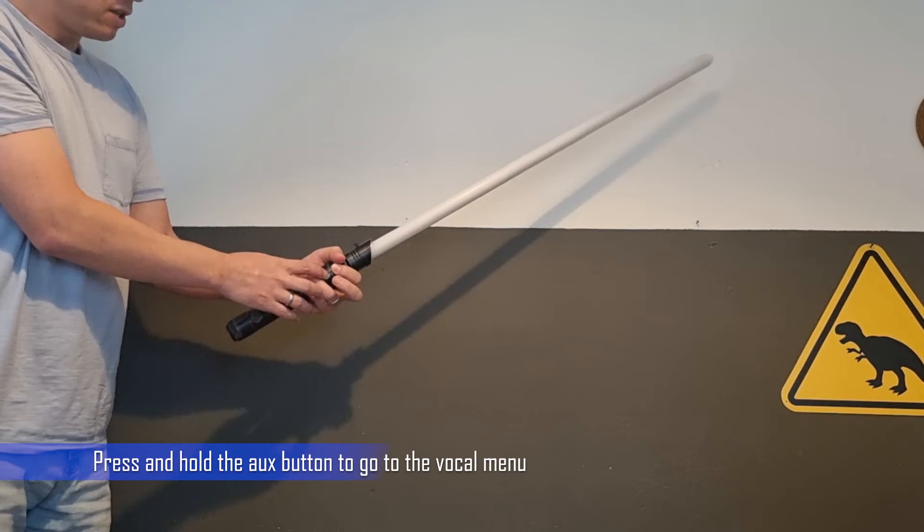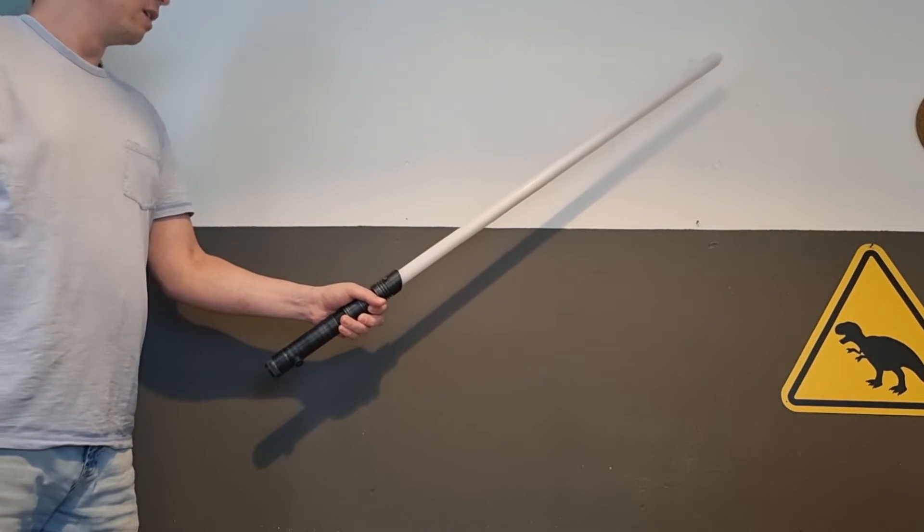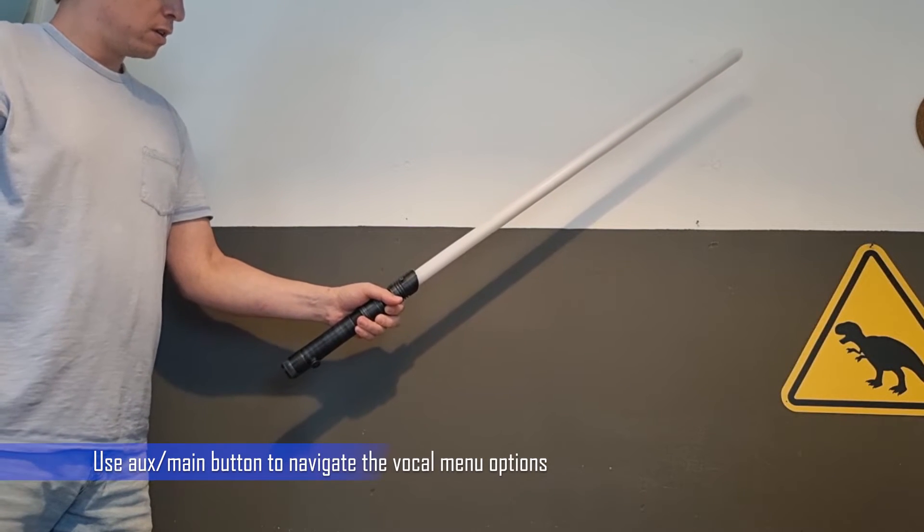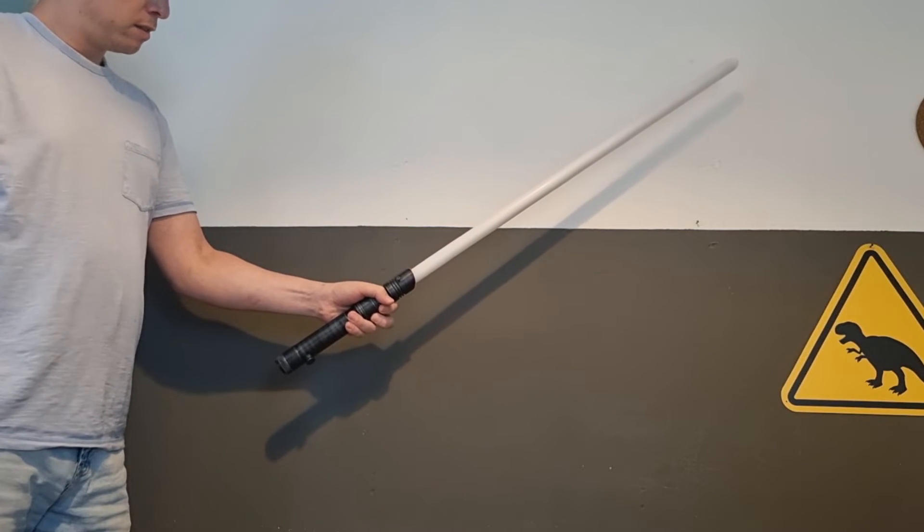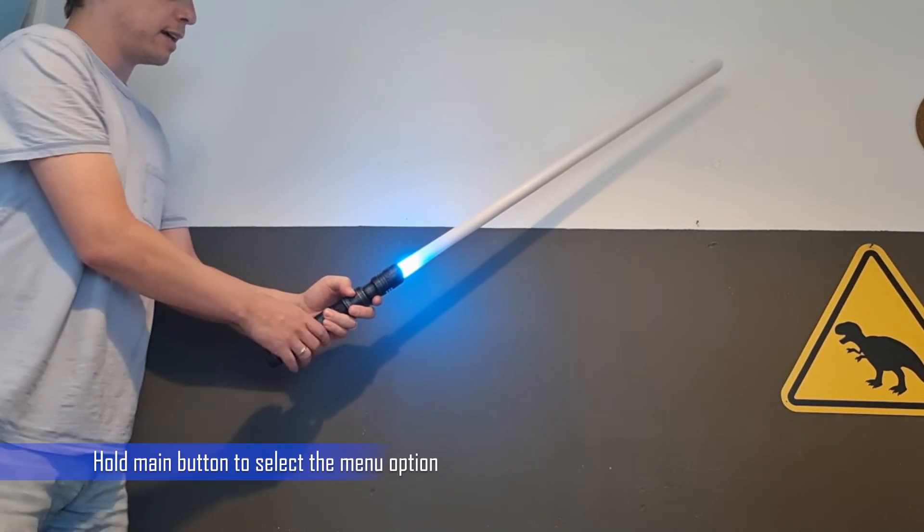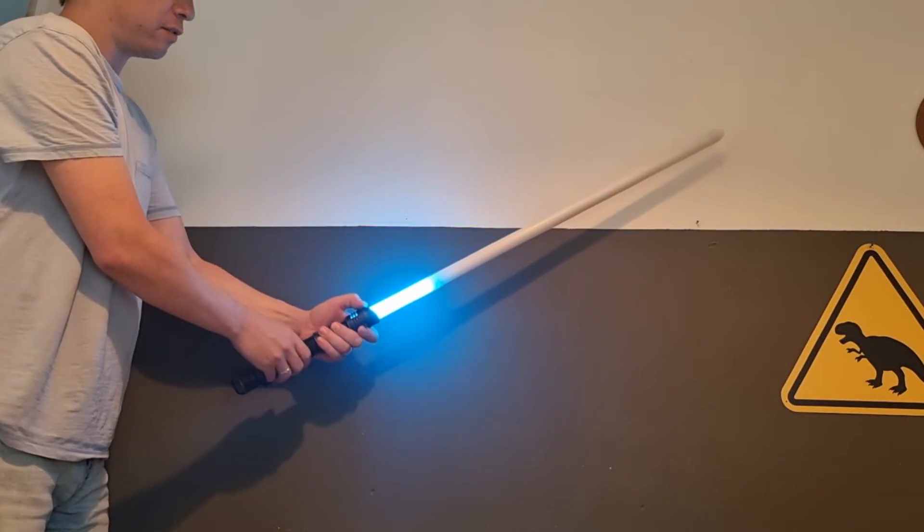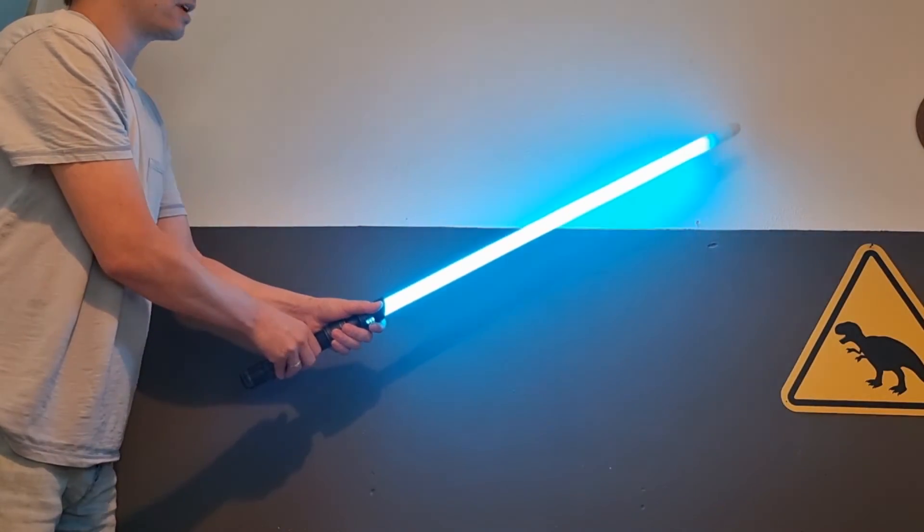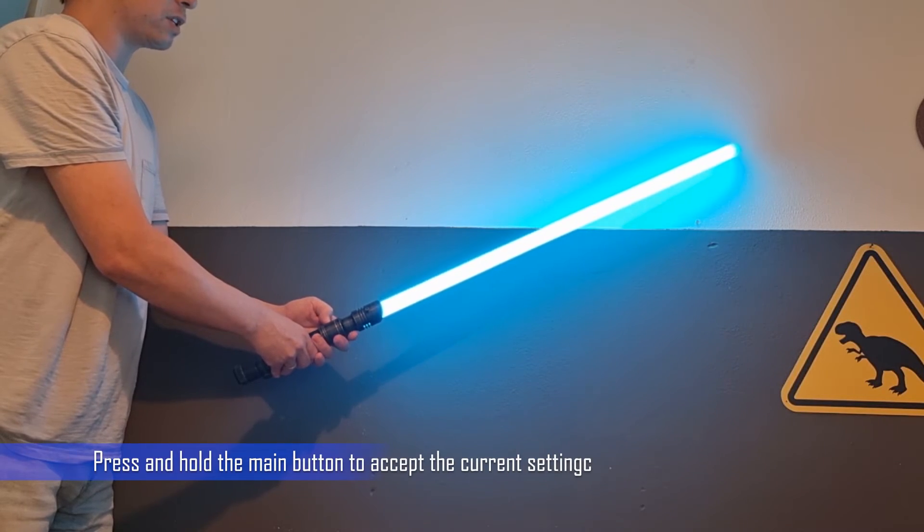You can press the auxiliary button to go into the vocal menu, go to the system menu, go to blade length, select that, and now you can twist right or twist left to set the LED strip setting so it will fill your entire blade. Let's do that and press the main button to accept.